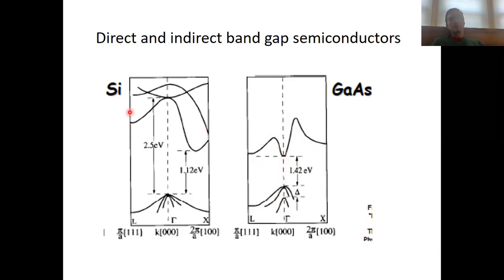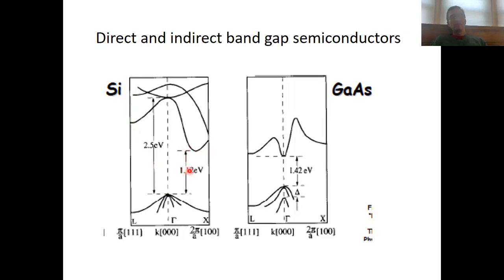Whereas when you have silicon, you have an indirect bandgap semiconductor. You see that the maximum of the valence band is here in k-space, while the minimum of your conduction band is here in k-space at a different position.